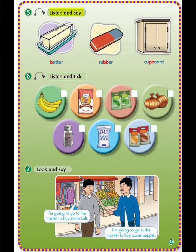5 — Listen and say, page 43. Sound focus: 'b' — butter, rubber, cupboard. 6 — Listen and tick. ستستمعون المادة الصوتية لتجيبوا عن الأسئلة — ضعوا إشارة صح على الصورة الصحيحة. Audio script: 1. I am going to go to the market to buy some salt. 2. I am going to go to the market to buy some pepper. 3. I am going to go to the market to buy some flour. 4. I am going to go to the market to buy some herbs.